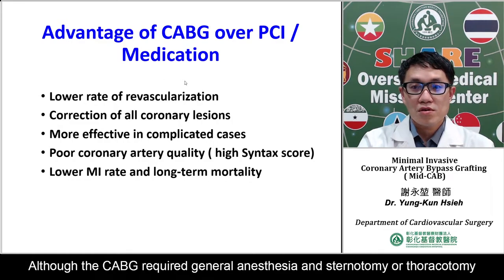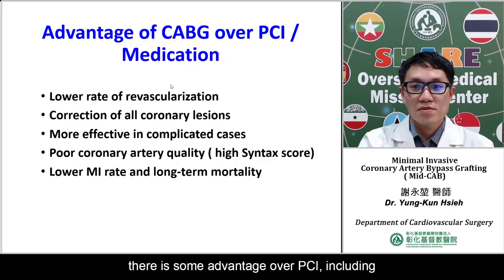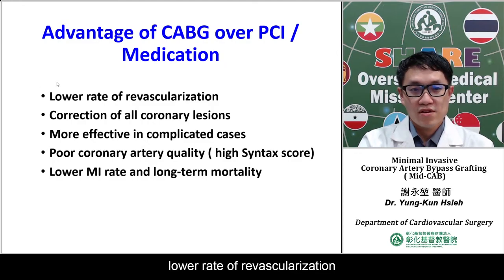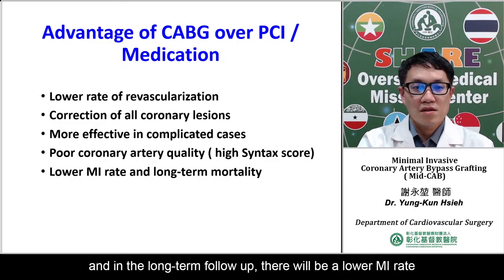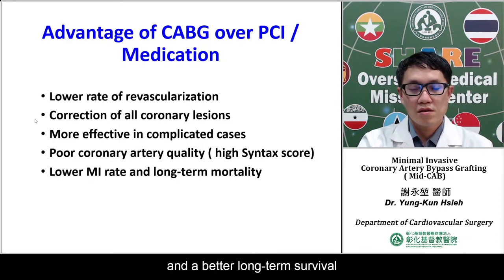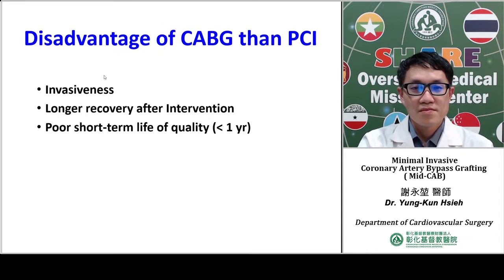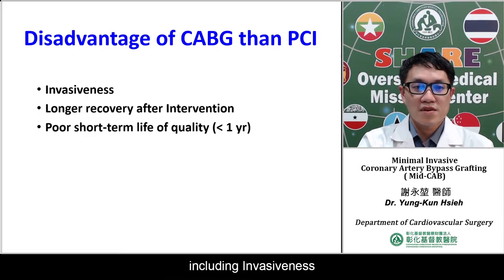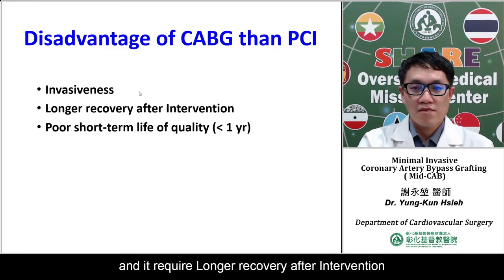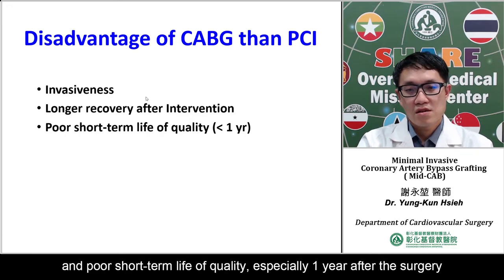Although CABG requires general anesthesia and sternotomy or thoracotomy, there are some advantages over PCI, including lower rate of revascularization, correction of all coronary lesions, and more effective results in complicated cases, especially in poor coronary artery quality. In long-term follow-up, there will be a lower myocardial infarction rate and better long-term survival. However, the disadvantage of CABG over PCI includes greater invasiveness, longer recovery after intervention, and poor short-term quality of life, especially one year after surgery.